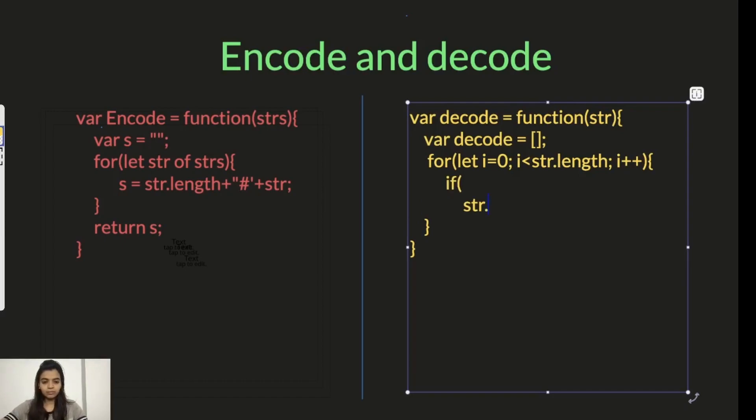So for that in JavaScript we have a function which gives us the ASCII value of a particular character which is charCodeAt. It will give you the ASCII value of the ith character of this string str. So this should be greater than equal to ASCII value of 0 which is 48 and also it should be less than ASCII value of 9, and also what we have to check is the next character should be a hash.